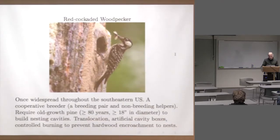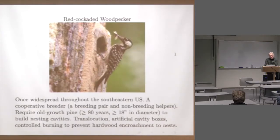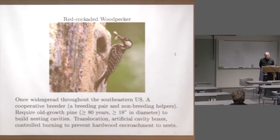The red-cockaded woodpecker is widespread in the southeastern United States and is a cooperative breeder — there's a breeding pair, and fledglings from earlier broods often serve as helpers. To increase population numbers, they've increased the number of cavity boxes, since normally the birds require old-growth pine of at least 18 inches in diameter to make a suitable cavity. Other conservation interventions include building artificial cavities and translocation to increase genetic variability.